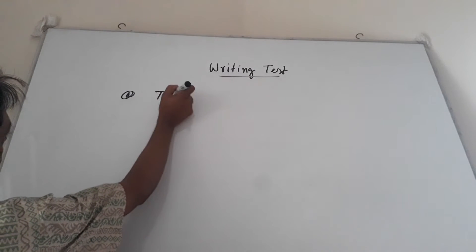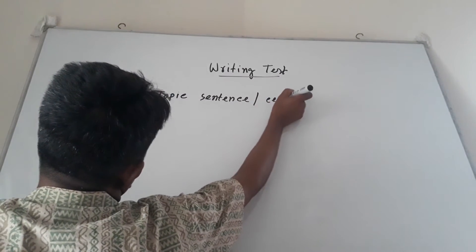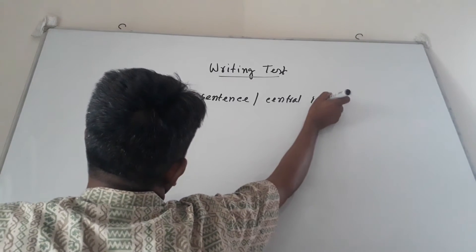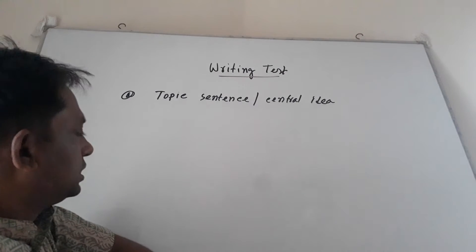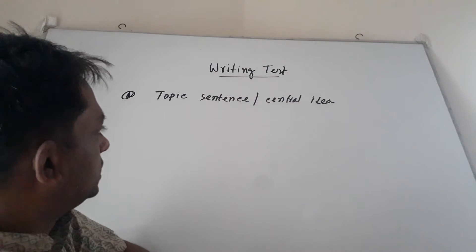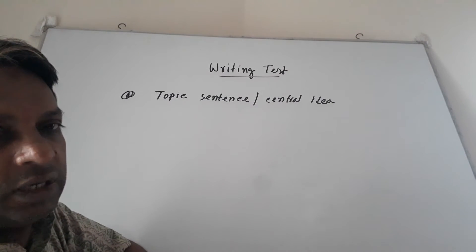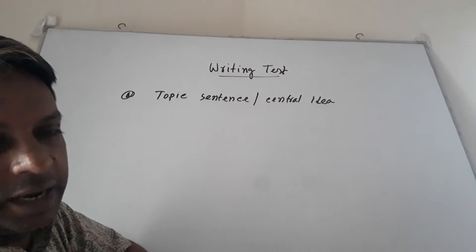The first one is topic sentence or central idea. You should remember that topic sentence is the clarification or definition of the subject matter on which you are going to write.